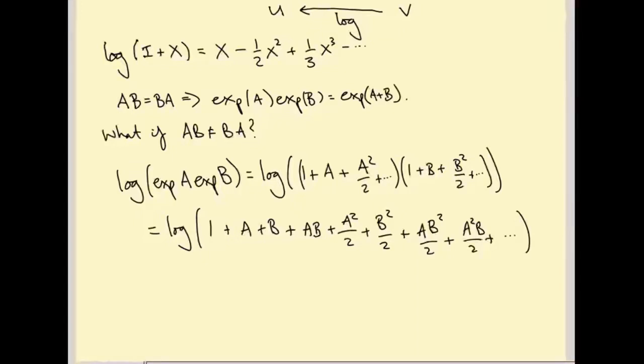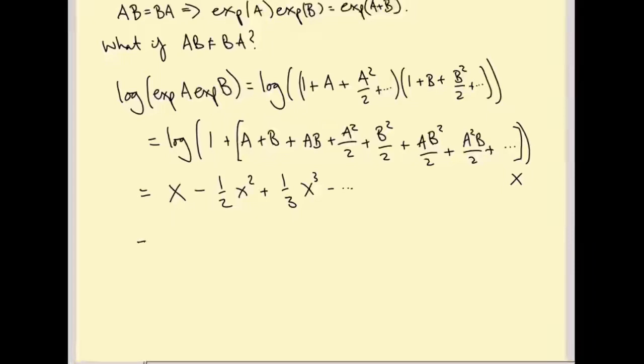But the point is this is log of 1 plus something. And if A and B are sufficiently small, then this power series for log makes sense, converges, and we can apply it. So log of 1 plus all of this stuff is... Well, let's give this stuff a name. Let's call it X, all this stuff in brackets. So A plus B plus AB plus A squared over 2, etc. This infinite sum is X. So this is X minus a half X squared plus a third X cubed minus dot dot dot. And now we can just substitute in X.